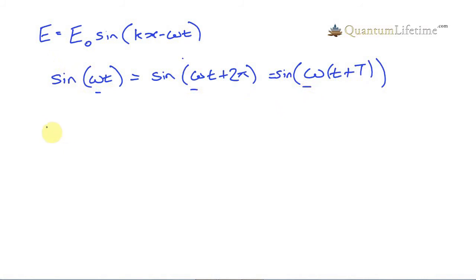So we can infer from this that omega t plus 2 pi, that's this argument here to sine, equals, and this time I don't intend to write sine,